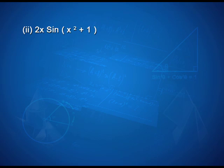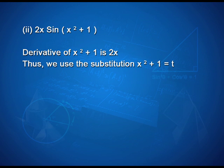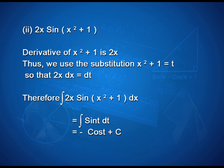For the second example, to integrate 2x·sin(x² + 1), we find the derivative of x² + 1 as 2x. Thus we use the substitution x² + 1 = t, so that 2x dx = dt. Therefore, ∫2x·sin(x² + 1)dx = ∫sin(t)dt = −cos(t) + c, which can be written as −cos(x² + 1) + c.